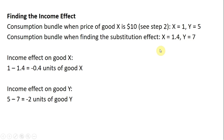To find the income effect, we take the consumption bundle when price of good X equals $10 (step 2: X equals 1, Y equals 5) and subtract the substitution effect bundle (X equals 1.4, Y equals 7). So 1 minus 1.4 gives the income effect on good X: minus 0.4 — confirming this is a normal good. The income effect on good Y is minus 2, so good Y is also a normal good.